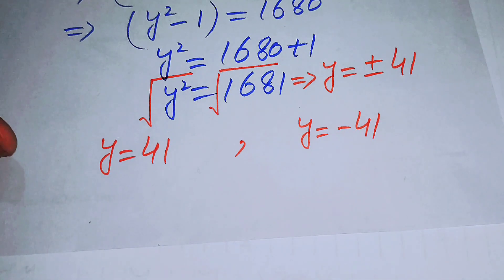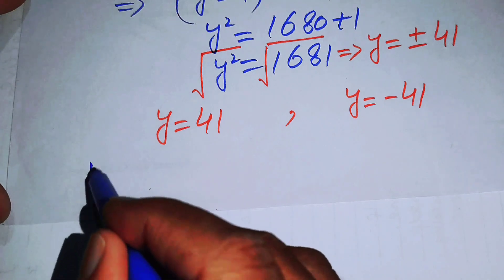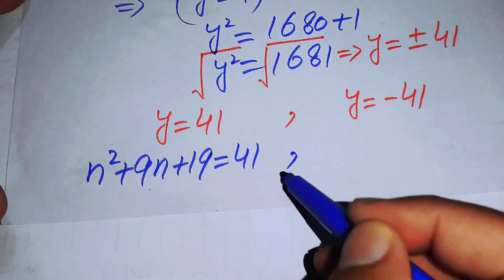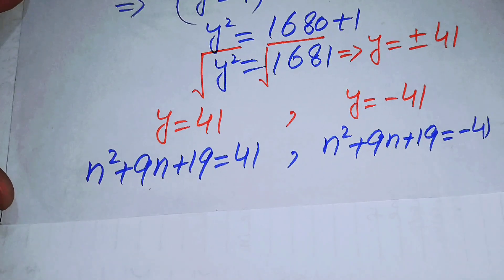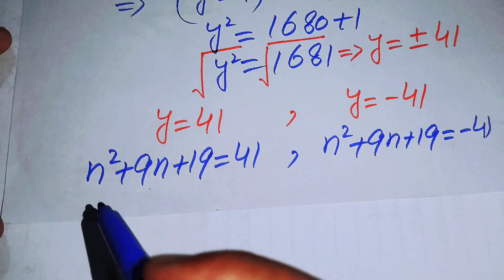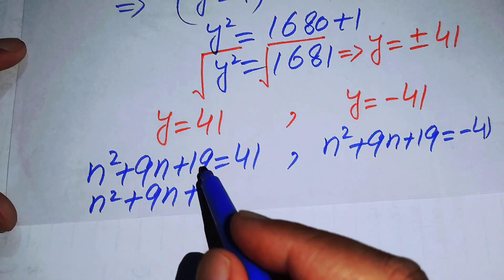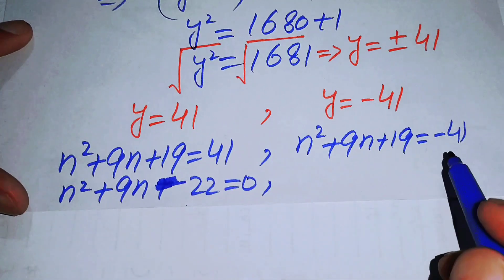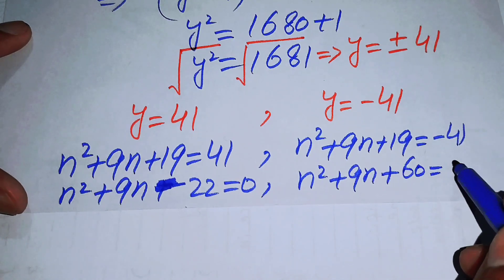Back substituting y = n²+9n+19, we get two quadratic equations. For y = 41: n²+9n+19 = 41, which gives n²+9n−22 = 0. For y = −41: n²+9n+19 = −41, which gives n²+9n+60 = 0.